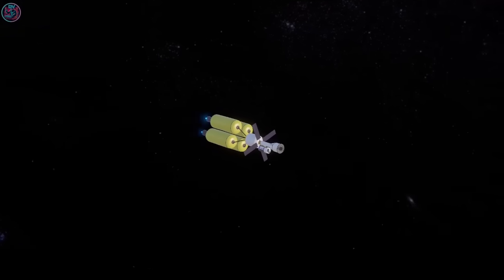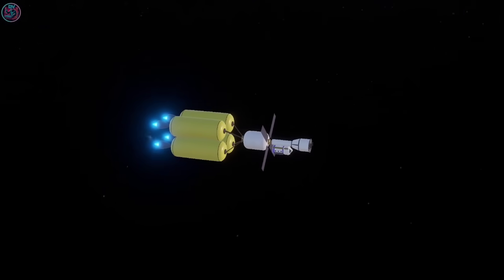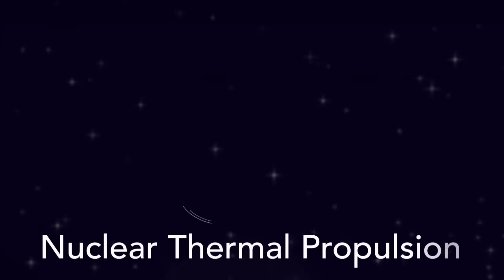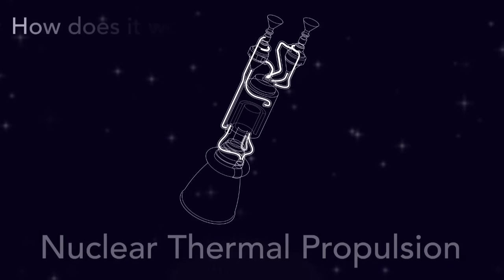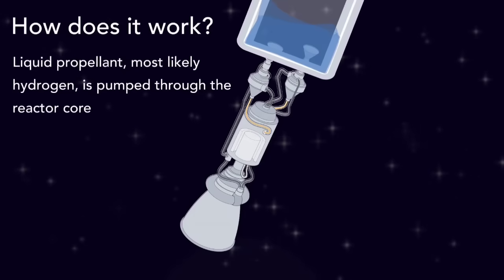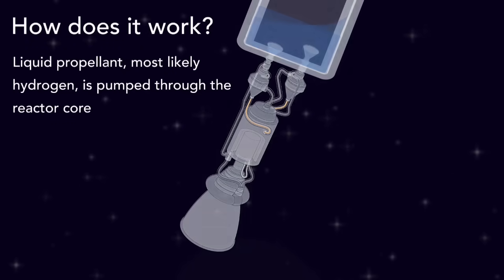Stressing that an eventual on-orbit demonstration remains the primary goal of the program. The engine would consist of a one-meter-long, ultra-high-temperature, high-assay, low-enriched, uranium-fueled, flow-through nuclear reactor.